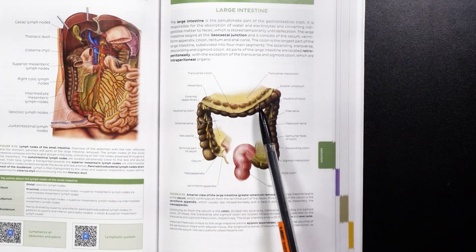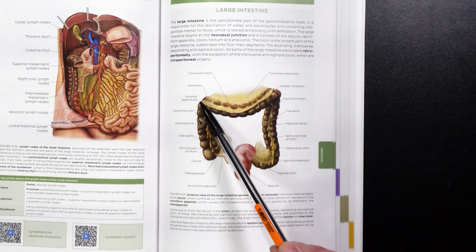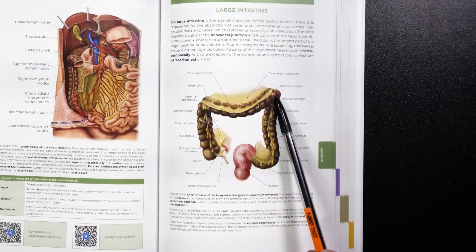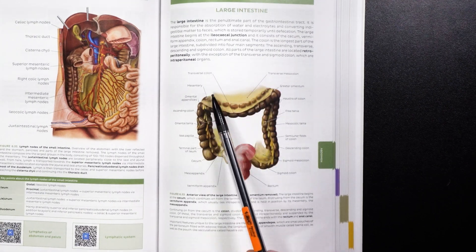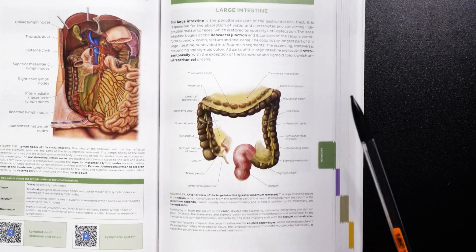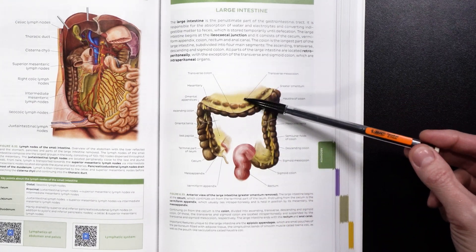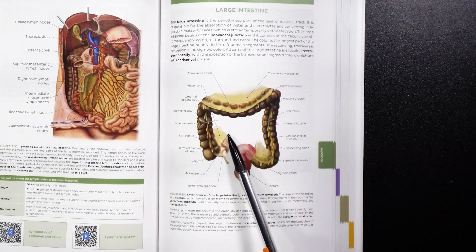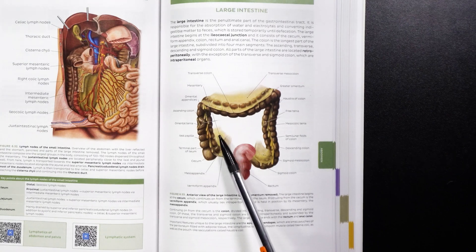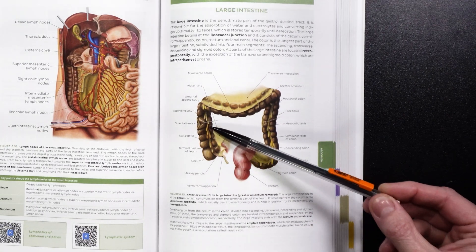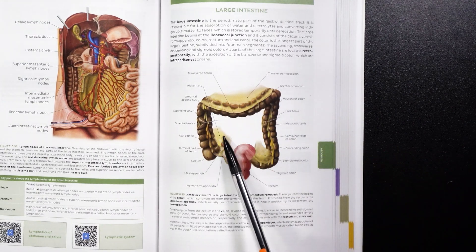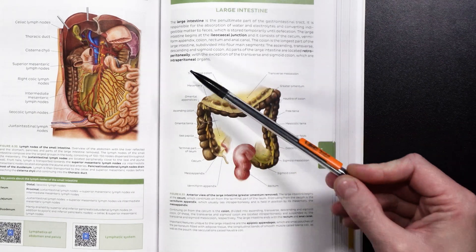Now we're in the transverse colon, and the transverse colon traverses from the right side of the body to the left side of the body. We also see this connective tissue up top, which we call the transverse mesocolon — connective tissue that helps anchor the intestines to the body wall. We can also see the mesentery, which is also made of peritoneum and anchors not only the large intestine but also the small intestine to the body wall.